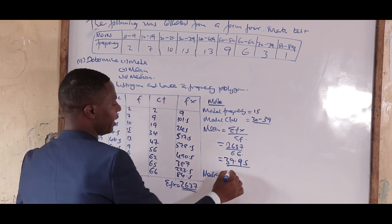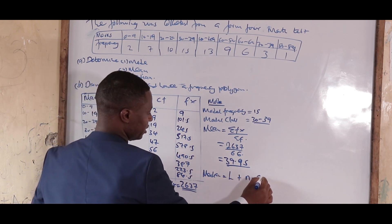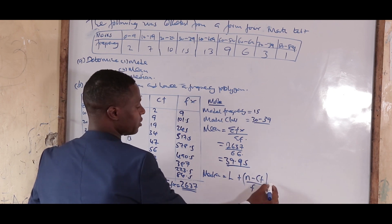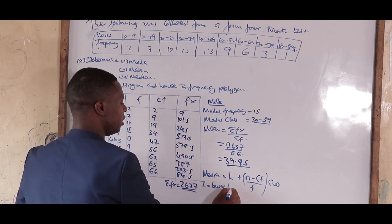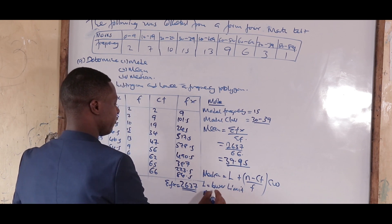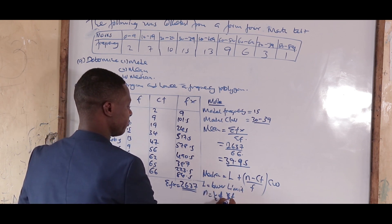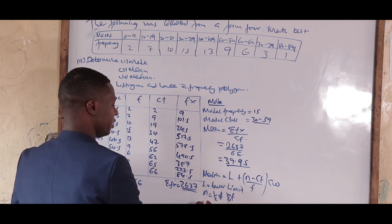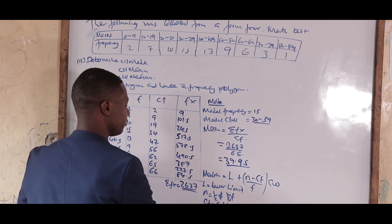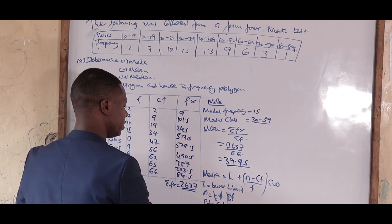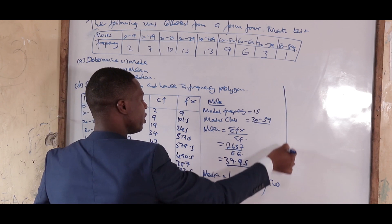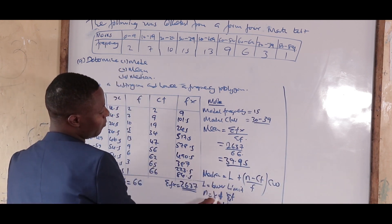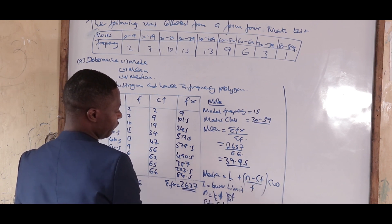For the median, the formula is: L + [(n − cf) / f] × cw. Here, L is the lower limit of the median class; n is half of sigma f; cf is the cumulative frequency of the class before the median class; f is the frequency of the median class; and cw is the class width.